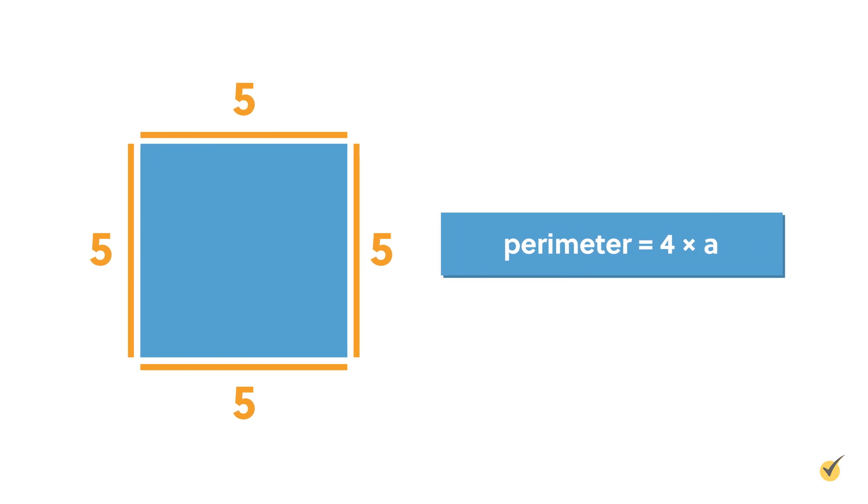We can apply this same sort of principle to finding the perimeter of a square. A square has four equal sides, so we can say that the perimeter of a square is equal to 4 times a.